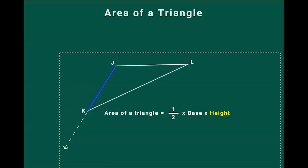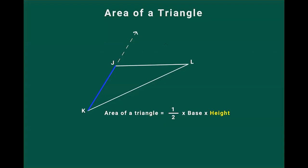So we can try to extend JK along J. If we extend JK along J, now we can see that we can draw a line from the third vertex L towards this extended line JK, which will make a 90-degree angle with it. We shall name this line LB. This line LB makes an angle of 90 degrees with the extended line JK, so LB is the height. The area of the triangle will be half into JK into LB, because JK is the base and LB is the height when we take JK as base.